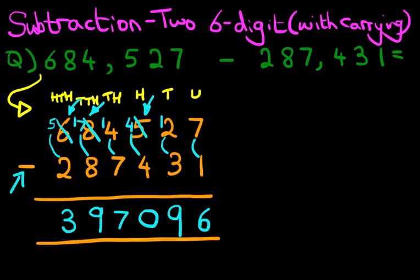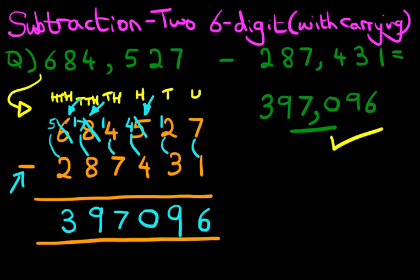And we have our answer: it is three hundred and ninety-seven thousand and ninety-six — 397,096. That is correct. So that wasn't very difficult, was it? And that is how we do subtraction of two six-digit numbers with carrying using the vertical format.